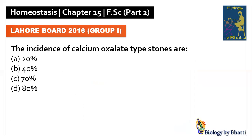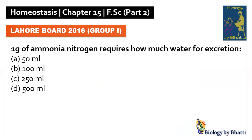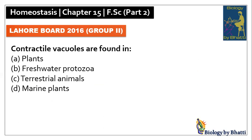Lahore Board 2016 Group 1: the incidence of calcium oxalate type of kidney stones is 70%, so the answer was C option. In this paper, 1 gram of ammonia nitrogen requires 500 ml of water for excretion, so the answer was D option.